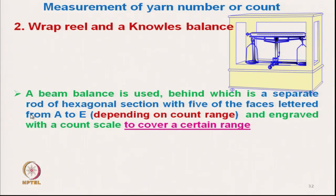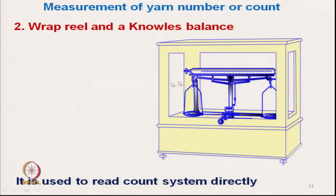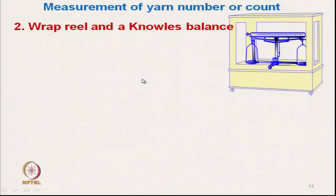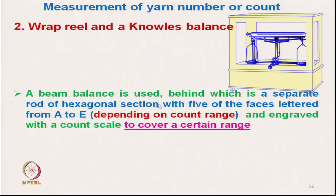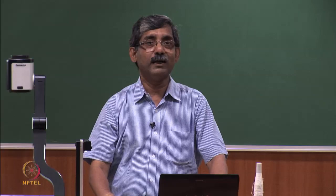The Knowles balance uses a beam balance system, behind which is a separate rod of hexagonal cross-section. Out of the 6 sides of the hexagon, 5 sides are indicated with different count ranges — lettered A to E. You can rotate this hexagonal rod to present any of the 5 faces depending on the count range. Face A covers the coarser count range, and E is the finest count range.